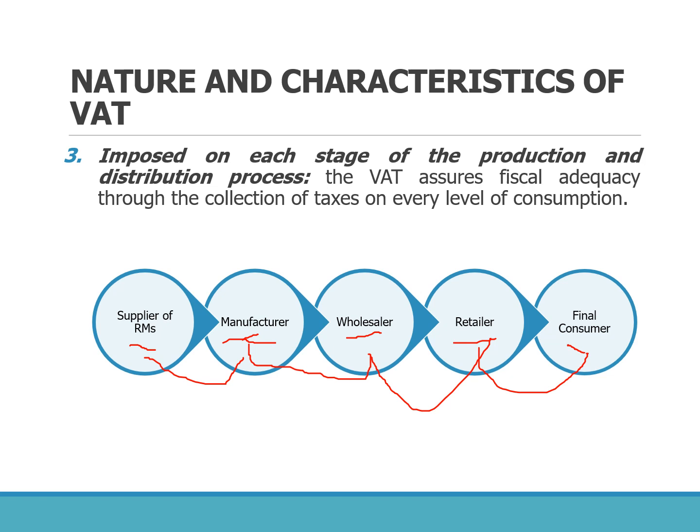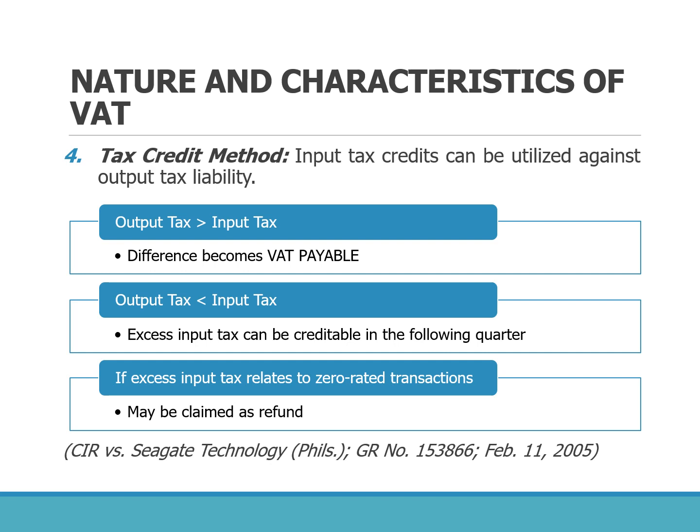The burden of shouldering the VAT is on the buyers at each stage. The supplier passes on the VAT to the manufacturer, who pays it alongside the selling price. The supplier then remits the VAT to the BIR. Ultimately, it is the final consumer who shoulders the burden of the VAT. This is why we say the VAT is imposed on every stage of the transfer.